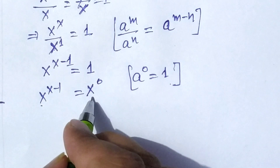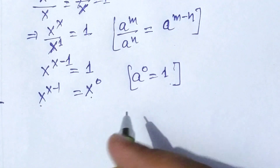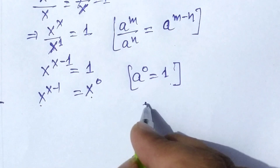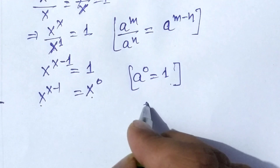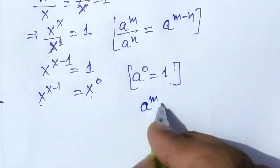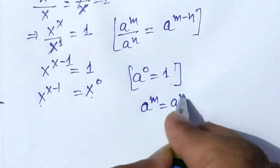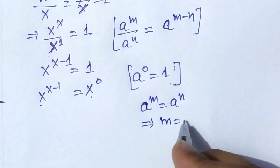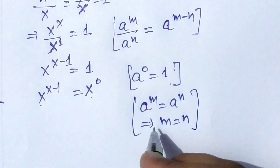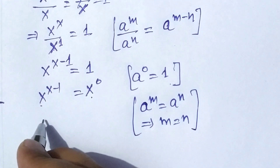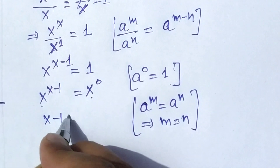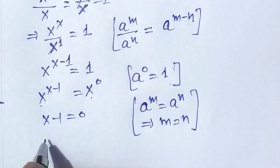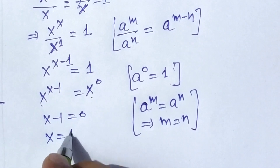Here, the base is the same but the power is different. When the base is the same and the powers are equal, we use the formula: if a to the power of m equals a to the power of n, then m equals n. By using this formula, we can write x minus 1 is equal to 0, so that x is equal to 1.